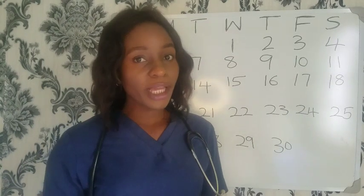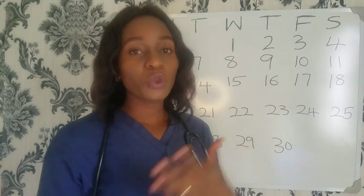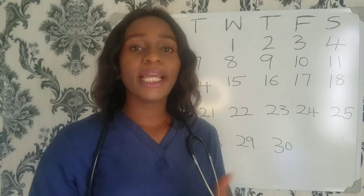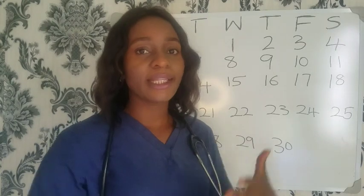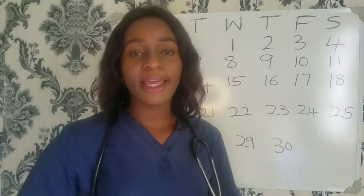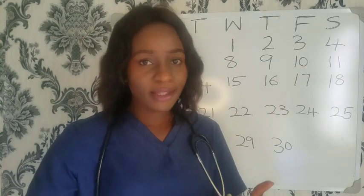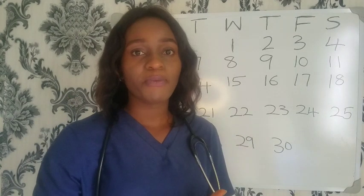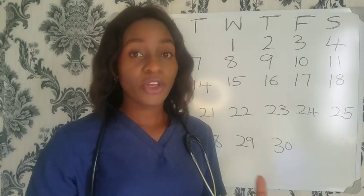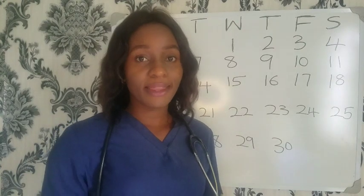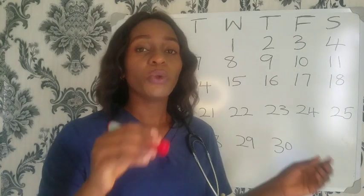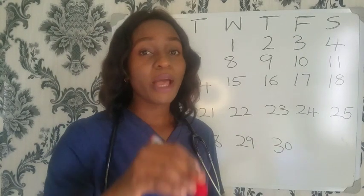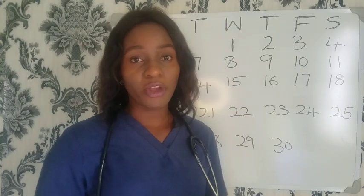Your menstrual cycle could be 22 days, 23 days, 24 days, 26 days, 28 days, 30 days, or even 32 days, with an average of 28 days. Knowing your menstrual cycle helps you track your ovulation.